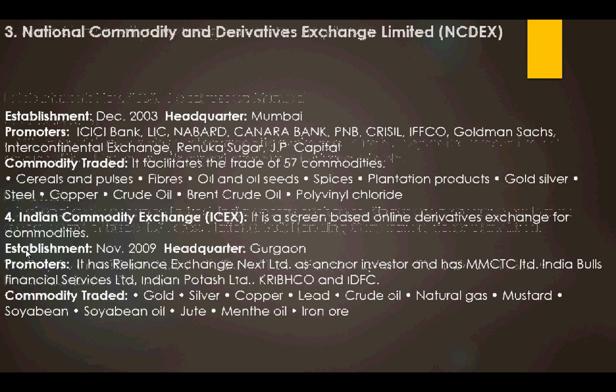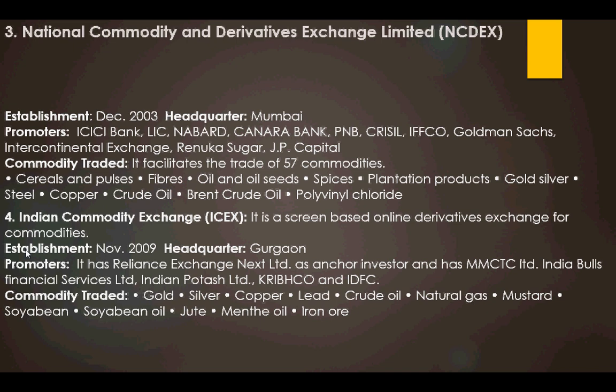NCDEX — National Commodity and Derivatives Exchange — was established in December 2003, with its headquarters at Mumbai. Promoters include ICICI Bank, LIC, NABARD, Canara Bank, Punjab National Bank, CRISIL, IFFCO, Goldman Sachs, Intercontinental Exchange, Renuka Sugar, and JP Capital. Nearly 57 commodities are traded on this platform, including cereals and pulses, fibers, oil and oil seeds, spices, plantation products, gold, silver, steel, copper, crude oil, and polyvinyl chloride.